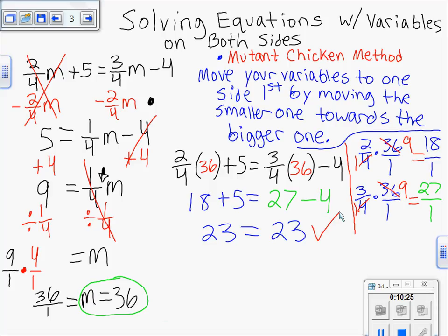So remember, when you're solving equations with variables on both sides, whether there are fractions or not, you always move your variables towards the bigger variable by moving the smaller one. So if one of them is negative, one of them is positive, the smaller one is obviously the negative one. And once you think you have your answer, once you turn it into a two-step equation.